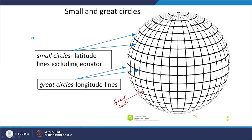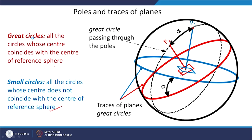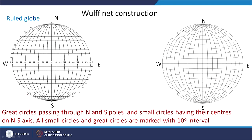The traces of planes projected onto the equatorial plane form great circles, and by marking and graduating these we get the construction called the Wulff net. We are going to use this Wulff net for all our calculations for the stereographic projection. It has North, South, East, and West, and is graduated with a 10-degree interval — every two graduations represent a distance of 10 degrees.